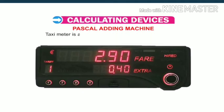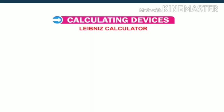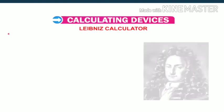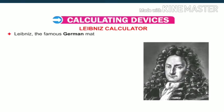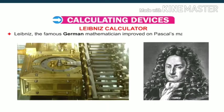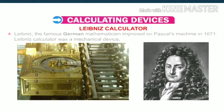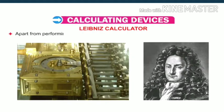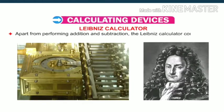A taxi meter is a perfect example of a mechanical calculator. Leibniz, the famous German mathematician, improved on Pascal's machine in 1671. The Leibniz calculator was a mechanical device that, apart from performing addition and subtraction, could also do multiplication, division and find square roots.